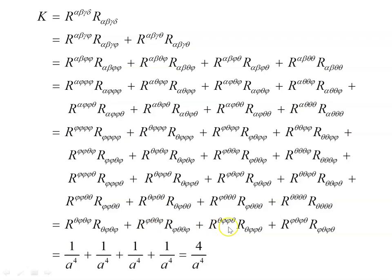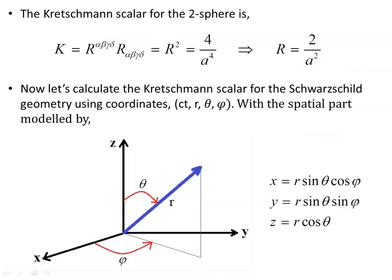The four non-zero terms each have the value 1/a⁴, where a is the fixed radius of the sphere. Adding those together gives 4/a⁴. The Kretschmann Scalar for the 2-sphere is therefore K = R² = 4/a⁴. Since the sphere has positive curvature, we take the positive square root, giving the curvature scalar as 2/a², which matches what was found in a previous video using the Ricci scalar — but this time derived via the Kretschmann Scalar.